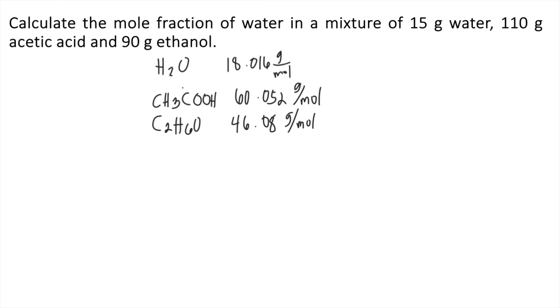After writing all the molar masses, all you have to do next is to solve the moles of each substance. Let's start with water. In the problem, we are given 15 grams of water. Using the molar mass of water, one mole of water is equivalent to 18.016 grams. The grams would cancel out. So that's 15 times 1 divided by 18.016, and that's approximately 0.833 moles of water.